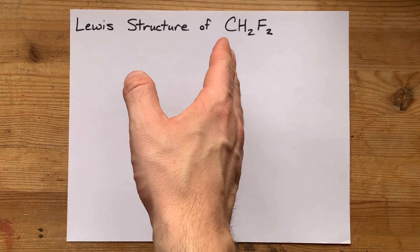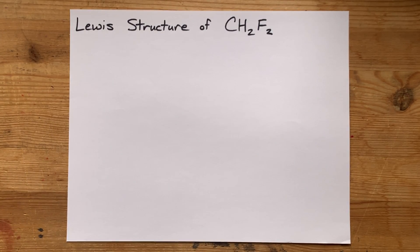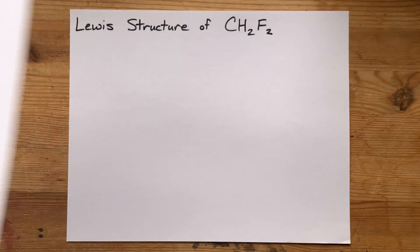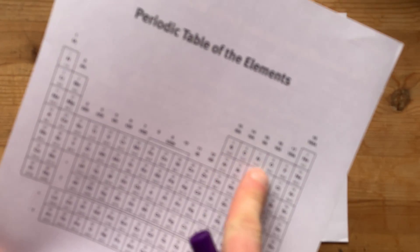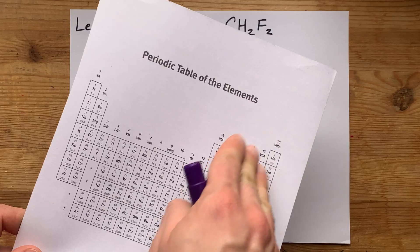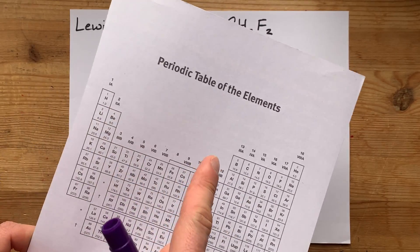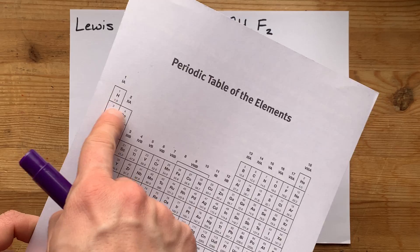We're going to draw the Lewis structure for CH2F2, which is difluoromethane. Carbon and fluorine are both non-metals from that side of the staircase on the periodic table, and hydrogen is also a non-metal, even though it's written over here, you just have to know that.